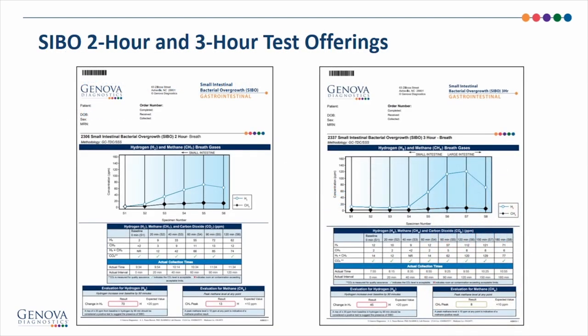Genova offers both a two-hour and a three-hour breath test. Both tests offer the same criteria for evaluation for hydrogen and for methane. The reason a clinician might choose the three-hour test is for those patients who have slower intestinal transit or constipation. A normal transit time of the test substrate lactulose in healthy fasting patients from the mouth to the junction between the small and large intestine is approximately 90 minutes. This is referred to as oro-cecal transit time. Someone with slower transit will have a prolonged oro-cecal transit time, longer than 90 minutes.